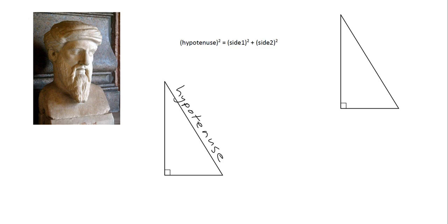The other two sides, the ones that make up the arms of the angle, they are not really interesting and so they aren't given any special name. I'm just going to call them side one and side two, so I've got some way to talk about them.